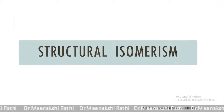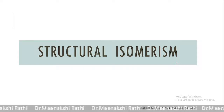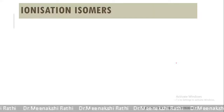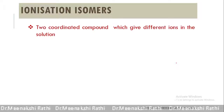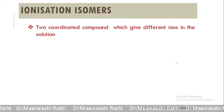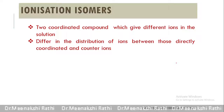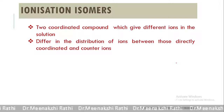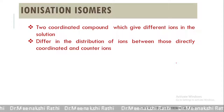Structural isomerism arises due to different possible arrangements of atoms or groups in their molecules. They have different ligands within their coordination spheres. The first type is ionization isomerism — this name is used to describe isomers that give different ions in solution. Two coordination compounds which differ in the distribution of ions between those directly coordinated and counter ions present in the crystal lattice are called ionization isomers.